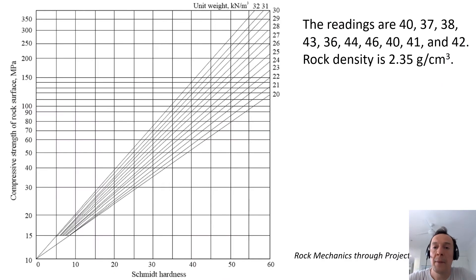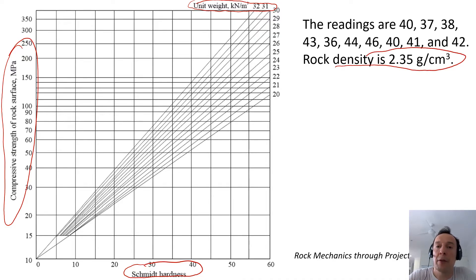So now I'm going to the next slide. In this slide you will see this chart where you have Schmidt hardness, and on the left-hand side you have unconfined compressive strength. Here on the right-hand side you will see unit weight - that's why we need to know the density of rock. We have these 10 readings.